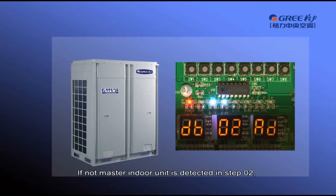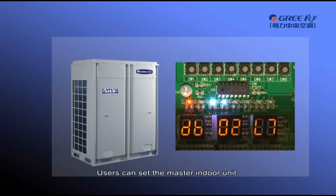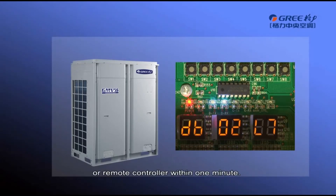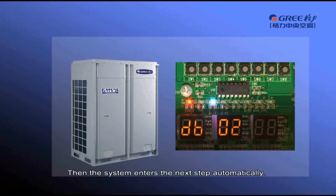If no master indoor unit is detected in step 2, LED3 will display error code L7. In this case, all outdoor unit buttons are temporarily not functional. Users can set a master indoor unit through debugging software, wire controller, or remote controller within 1 minute. If no master indoor unit is set within 1 minute, the system will set one automatically, and then enter the next step.